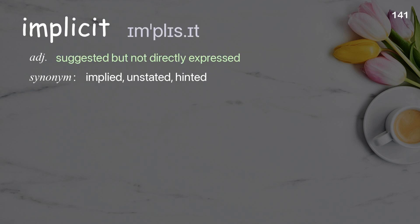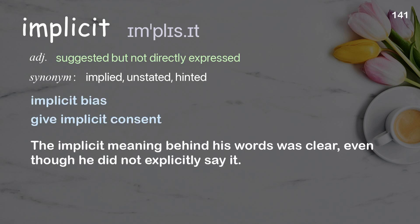Implicit: suggested but not directly expressed. Examples: give implicit bias, give implicit consent. The implicit meaning behind his words was clear, even though he did not explicitly say it.